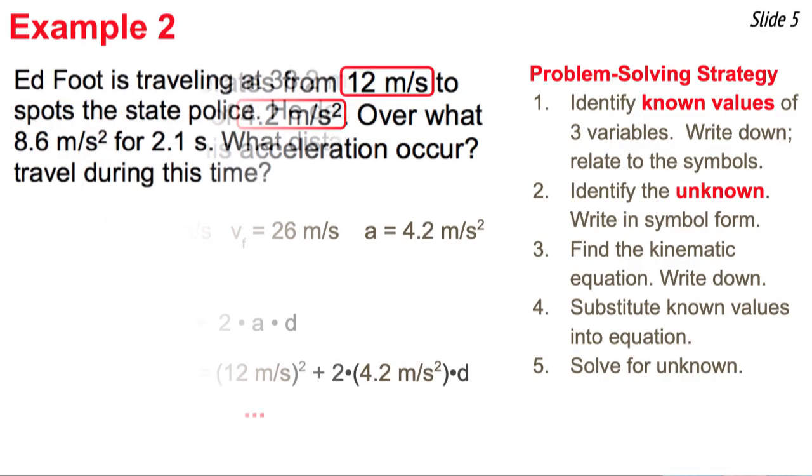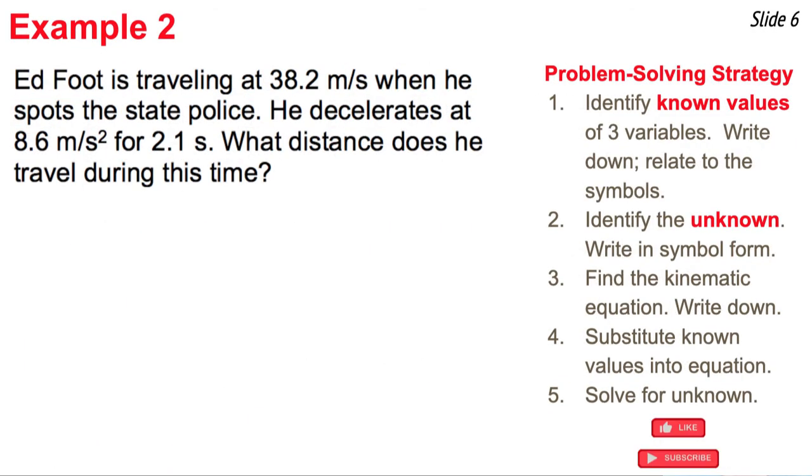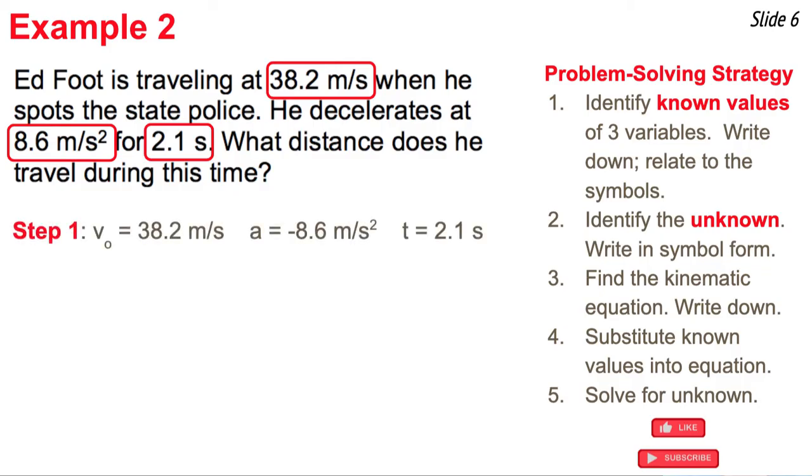Let's try another one. This is example two. I'm going to read the problem and look for three known variables and relate them to the symbols. Ed Foote is traveling at 38.2 meters per second. That's a velocity, an original velocity. He spots the state police so he decelerates at 8.6 meters per second squared for 2.1 seconds. That's an acceleration value. But since it's a deceleration, I'm going to call it negative 8.6 meters per second squared. And the 2.1 seconds, well that's the time. So I take these three values and I write them down and equate them to the symbols within my four kinematic equations.